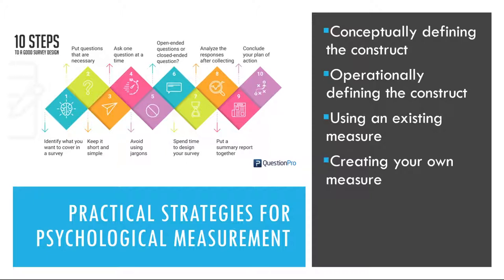To create a true multiple-item measure, a researcher might instead ask people to rate the degree to which ten statements about financial responsibility describe them on the same five-point scale. Finally, the very best way to assure yourself that your measure has clear instructions, includes sufficient practice, and is an appropriate length is to test several people. Observe them as they complete the task, time them, and ask them afterward to comment on how easy or difficult it was, whether the instructions were clear, and anything else you might be wondering about. It's better to discover problems with a measure before beginning any large-scale data collection.